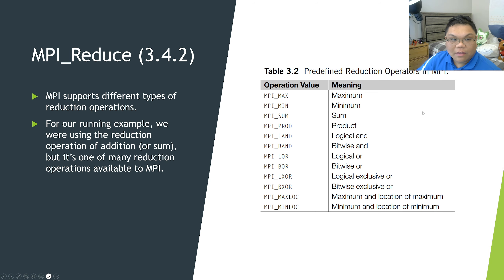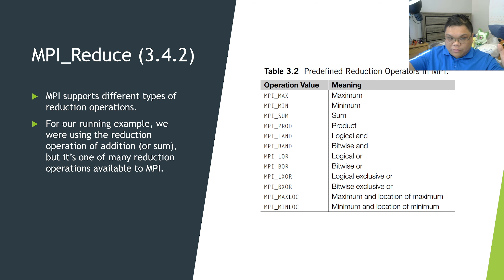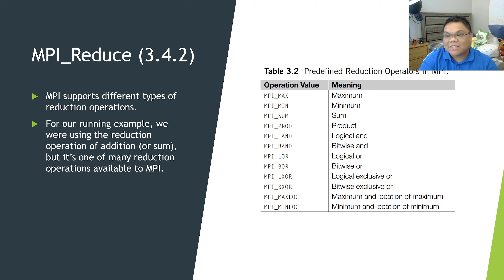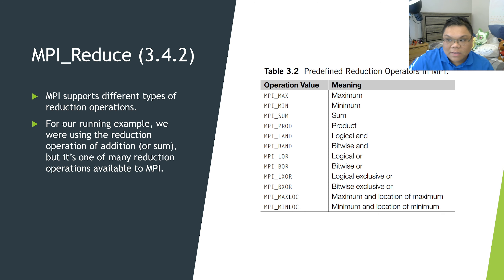Collective communication is what it's called. A reduction operation is where you have multiple values across multiple processes and you total all those values into one single variable stored on one process. Addition is not the only reduction operation we can do in MPI, but we are looking at addition as our main example in the trapezoid program.